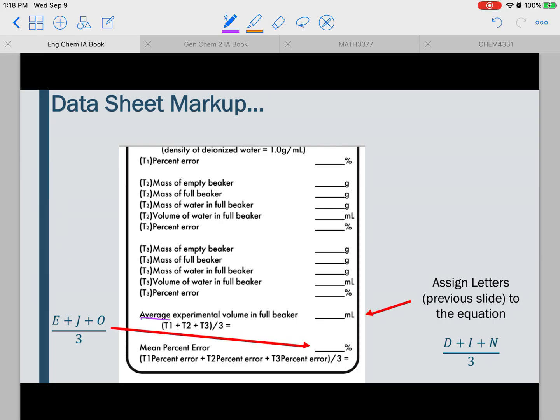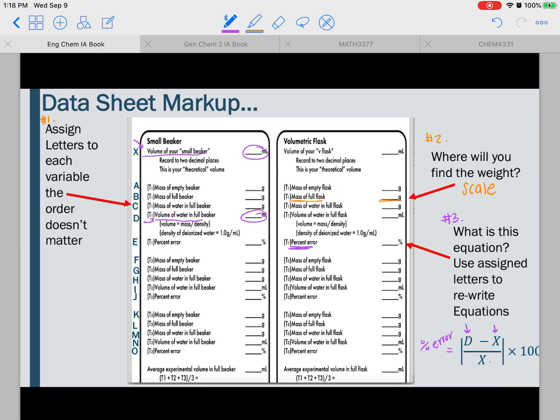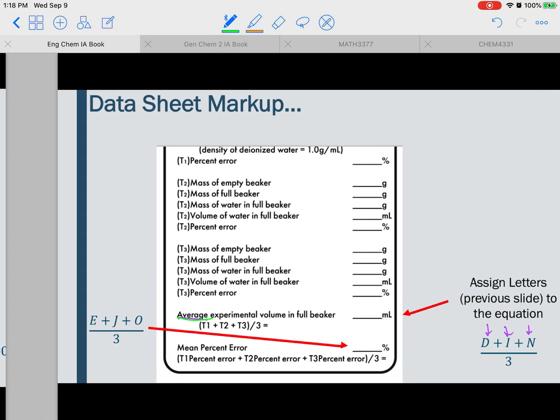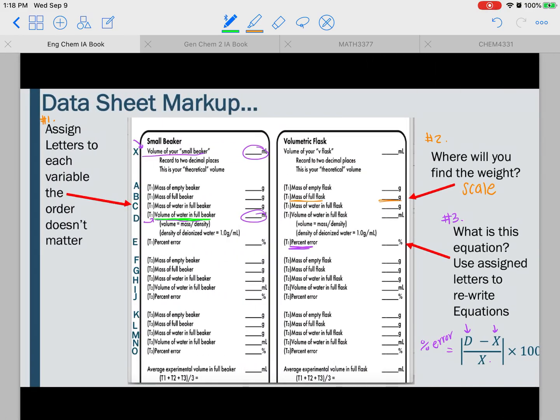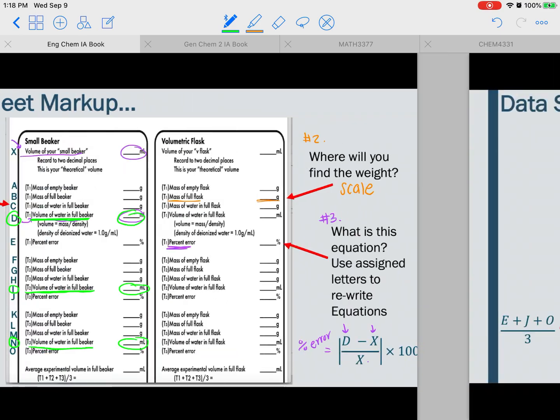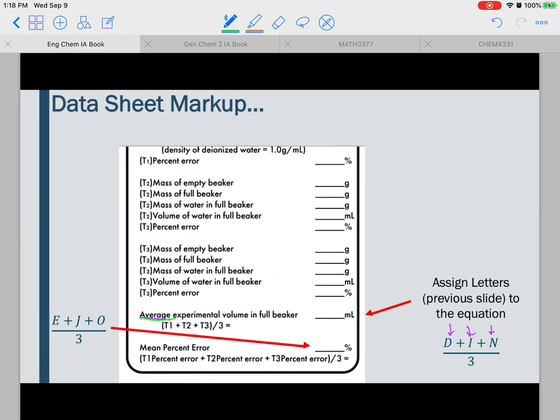So some other examples of this are, let's say you have to take the average of something. So using the letters that you assign to all your different things, you're going to be like, okay, so the average volume in a full beaker. So here I have D, I, and N. Because we're wanting the average, so we were finding the average experimental volume in a full beaker. So the volume of a full beaker, volume of a full beaker, and then the volume of a full beaker. So here, I know the measurements are right here when I find them in lab. But because I know that D, I, and I believe N are the ones that we're going to be averaging, I can just write the formula D plus I plus N divide by three. That way, when you're in lab, you don't have to spend time looking for all the numbers. You already know that D, I, and N are going to be the ones that you're going to be averaging together.